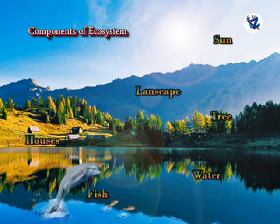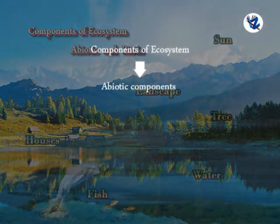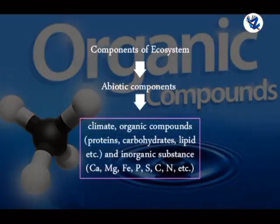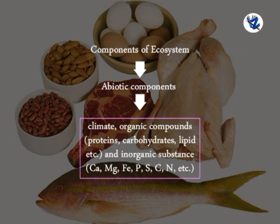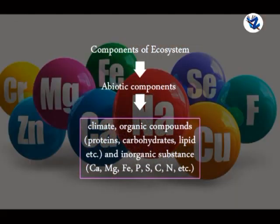An ecosystem has two main components: abiotic and biotic. Abiotic components include climate, organic compounds such as proteins, carbohydrates, and lipids, and inorganic substances like calcium, magnesium, iron, etc.